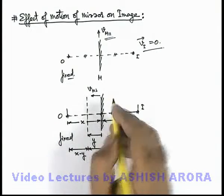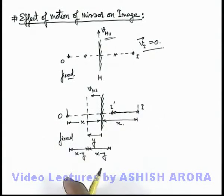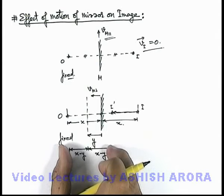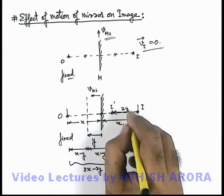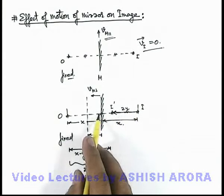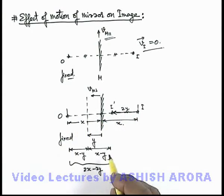And now at its new position i prime, the separation between image and object will be 2x minus 2y. That means the image is displaced by a distance twice the distance by which the mirror is displaced.